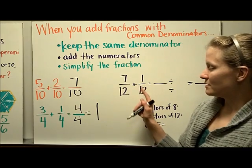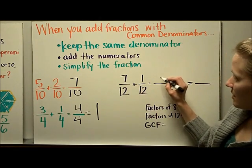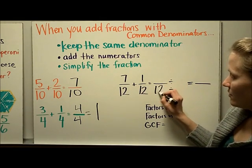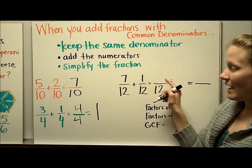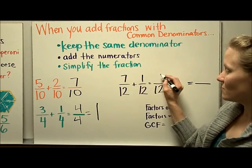Here, 7/12 plus 1/12. I'm going to keep the same denominator, which is 12, and then I'm going to add the numerators. 7 plus 1 is 8.